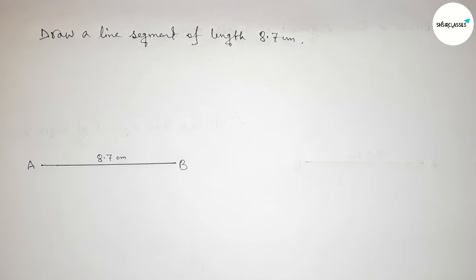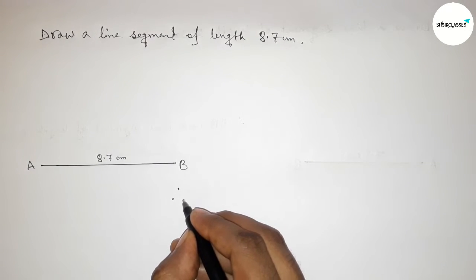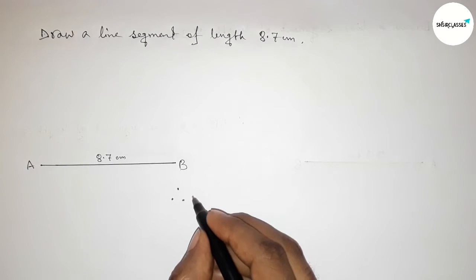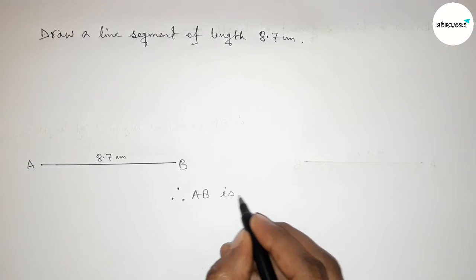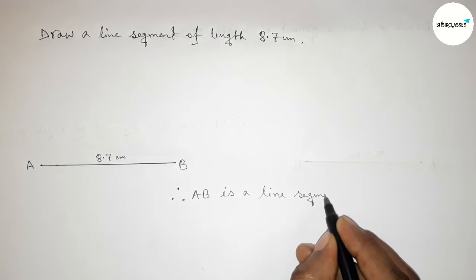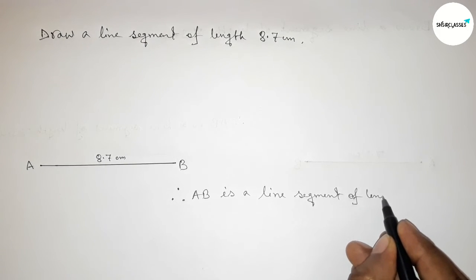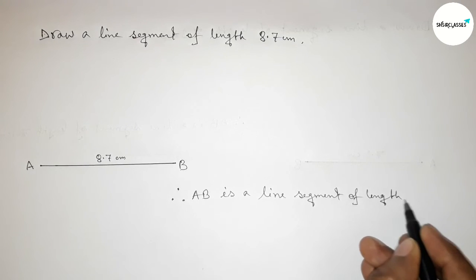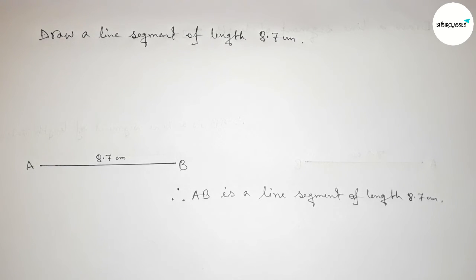So therefore now we can say that AB is a line segment of length eight point seven centimeters. And with the help of a scale, you can draw this line this way. Okay, so that's all.